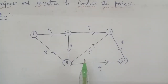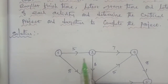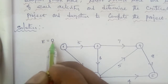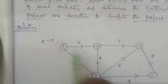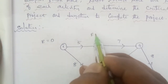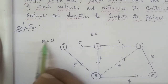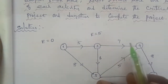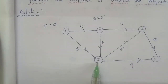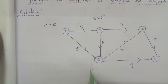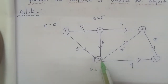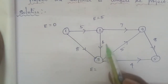Now we calculate the earliest start time. The symbol for earliest start time is E. The initial starting value is 0, so E is equal to 0 at node 1. For node 1 to 2: the E value at node 1 is 0, plus duration 5, gives E equal to 5 at node 2. For node 1 to 3: E value is 0 plus duration 8.